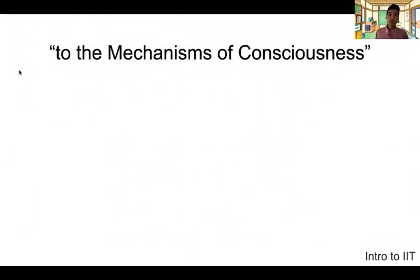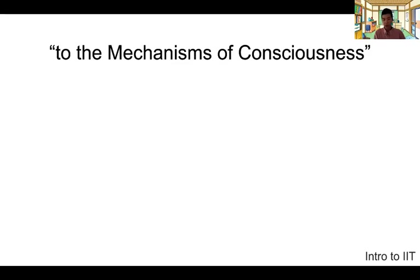The next step is the mechanism of consciousness side. What IIT tries to do is, after identifying these characteristics, translate these properties into mathematical formulations — determining what kind of mechanism can support features such as existence, composition, integration, information, and exclusion.